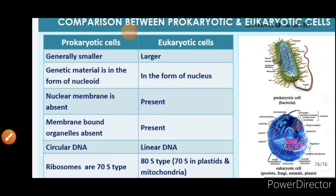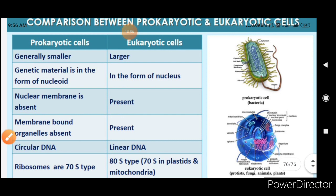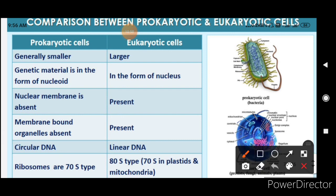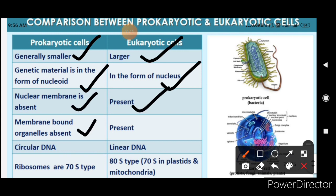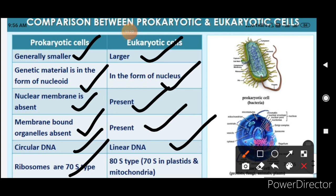The differences between prokaryotic and eukaryotic cells: prokaryotic cells are smaller, eukaryotic cells are larger. In prokaryotes, genetic material is in the form of a nucleoid; in eukaryotes it forms a proper nucleus with a nuclear membrane. Membrane-bound organelles are absent in prokaryotes and present in eukaryotes. Prokaryotes have circular DNA and 70S ribosomes; eukaryotes have linear DNA and 80S ribosomes.